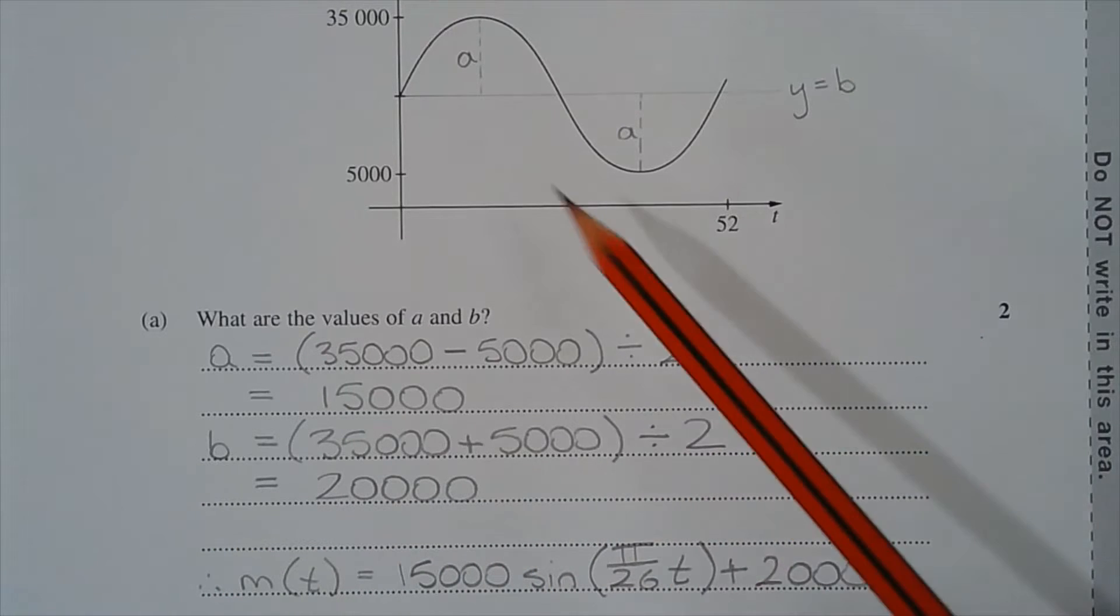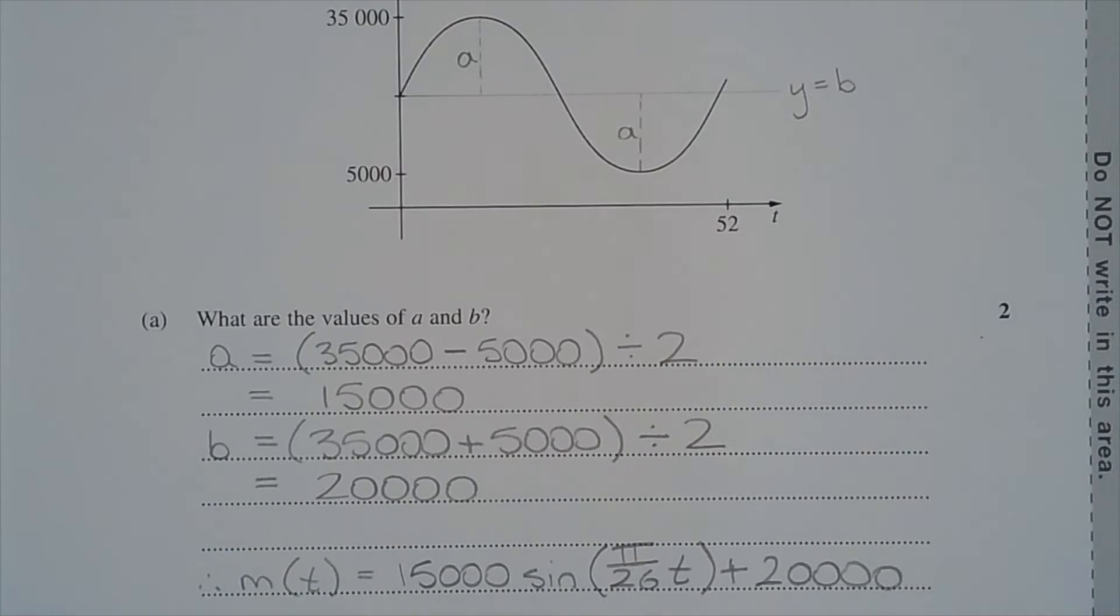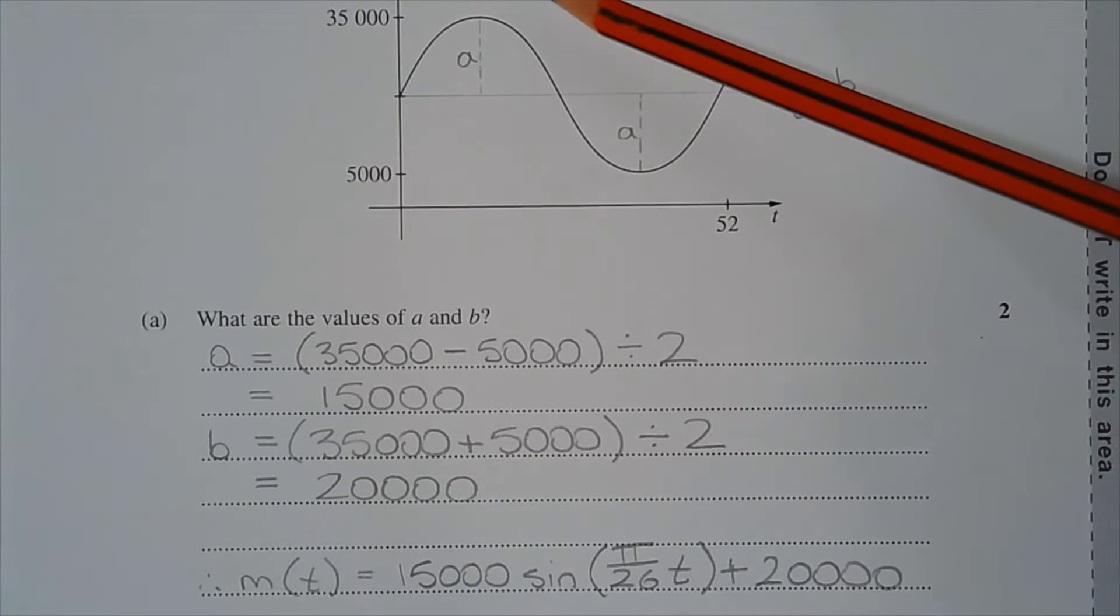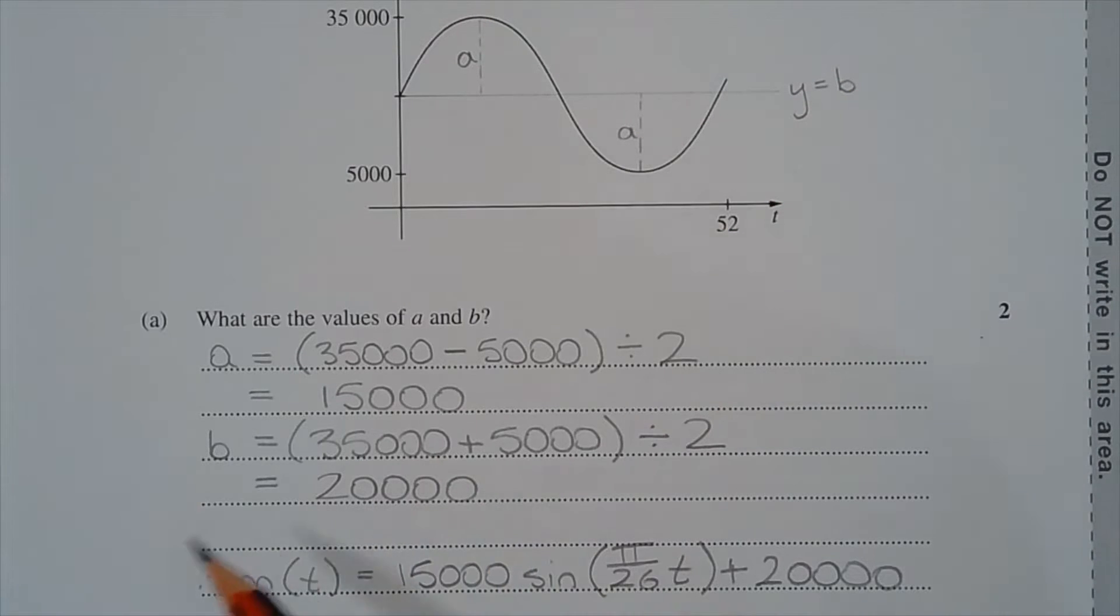Now b represents the line of center or the mean value of the sine wave, and that can be found by finding the average of the peak and the trough. So b equals (35,000 + 5,000) divided by 2, that equals 20,000. So m(t) equals 15,000 sine pi over 26t plus 20,000.